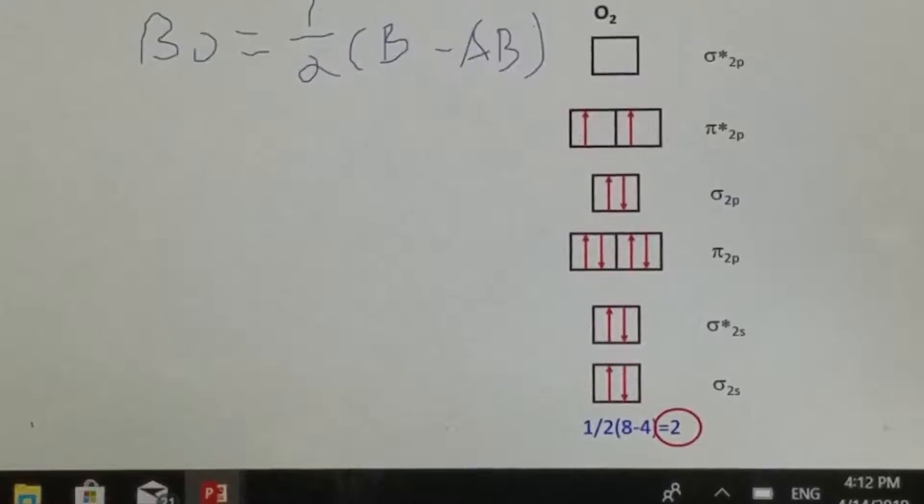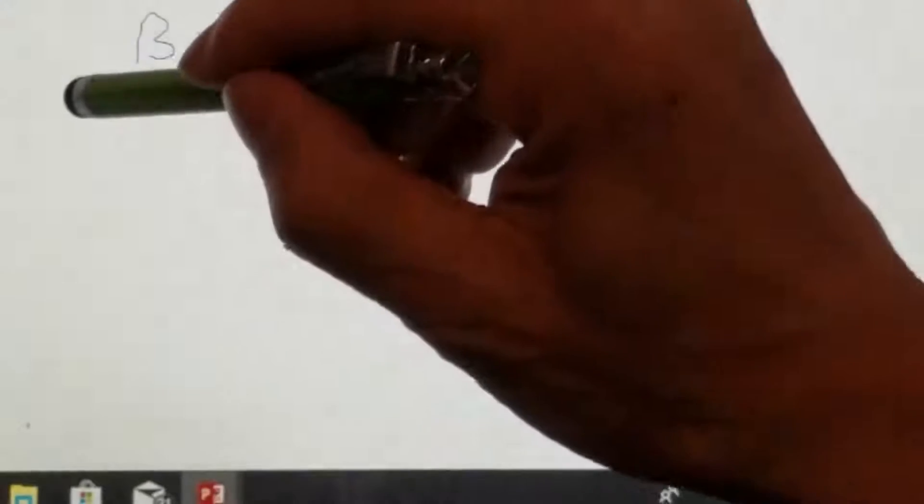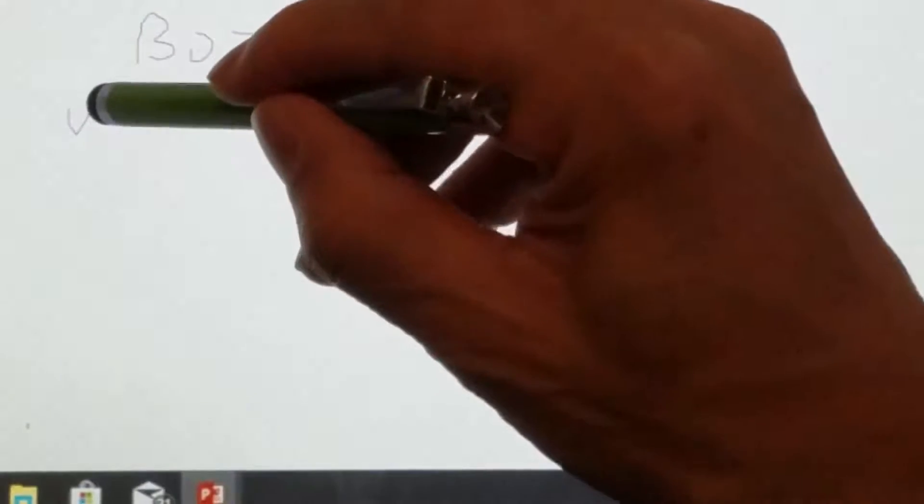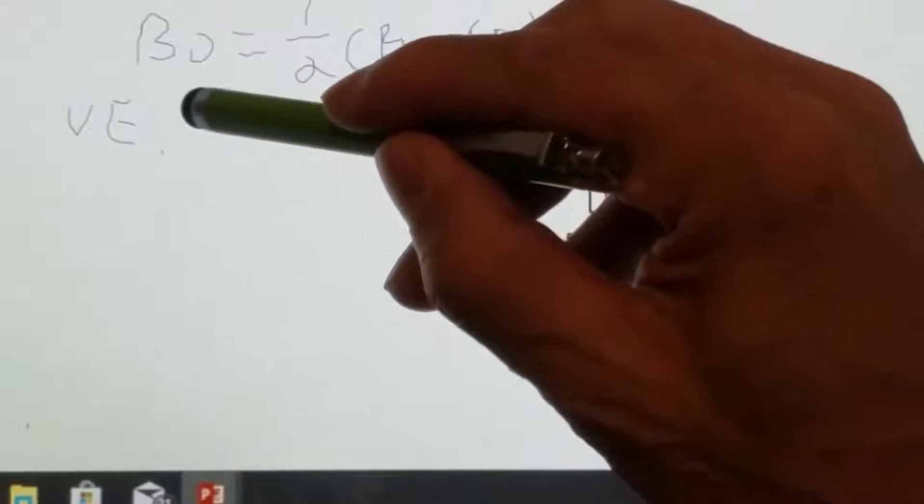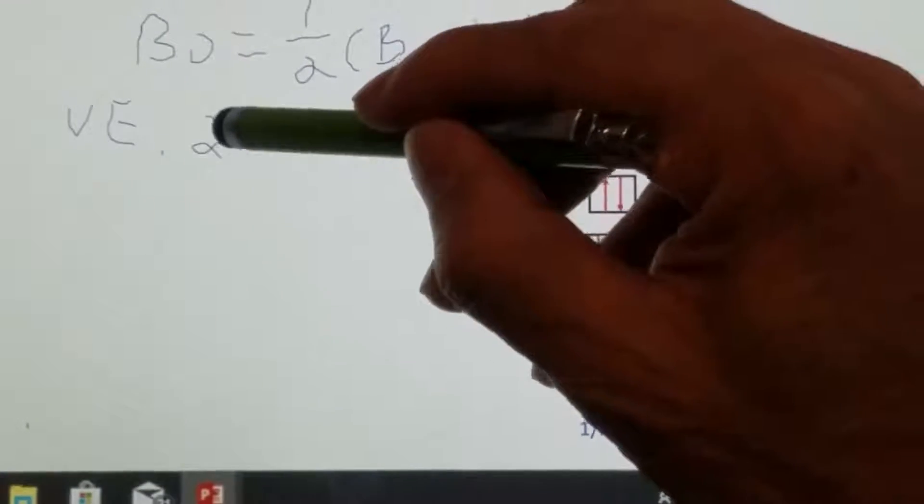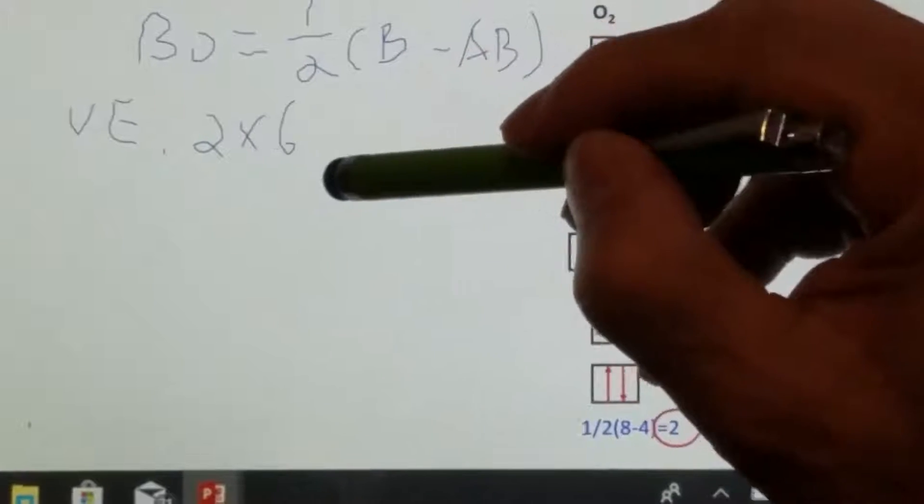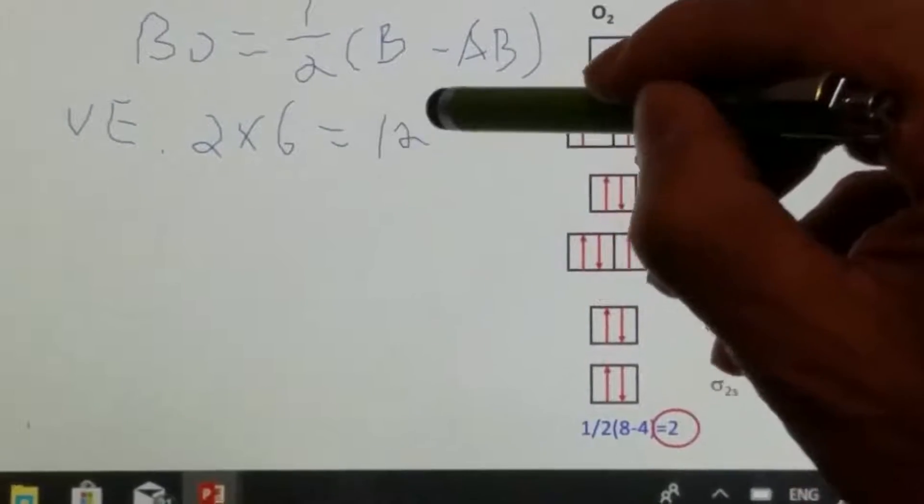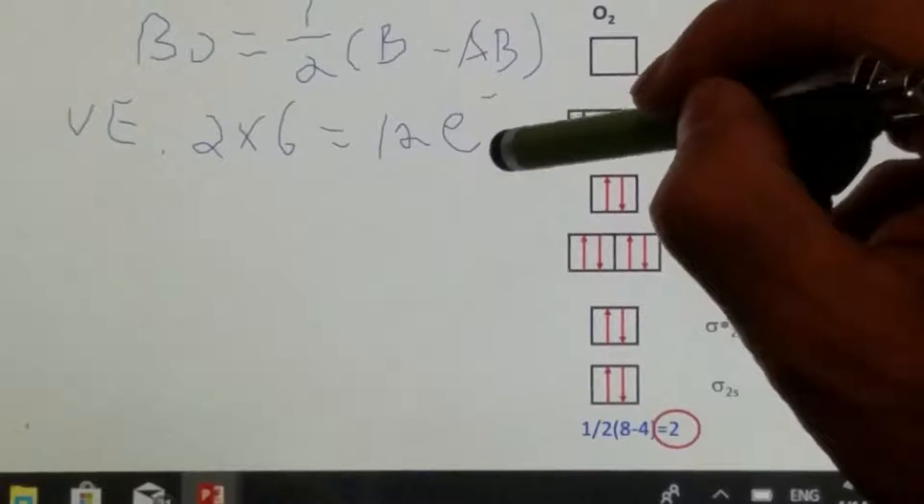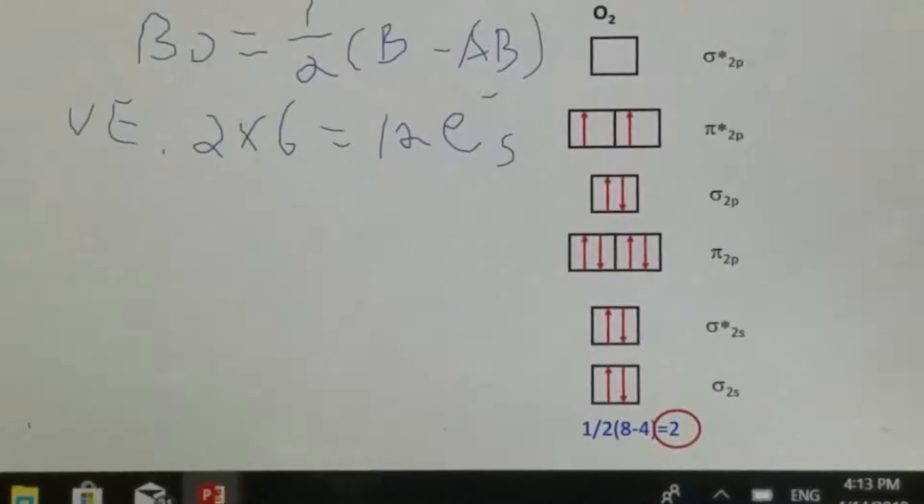Now let's check the number of valence electrons for O2 molecule. We have two oxygen, each oxygen has six valence electrons, therefore oxygen molecule should have a total of 12 electrons.